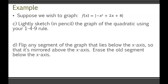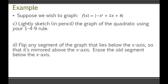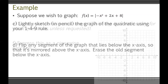Step C: lightly sketch in pencil the graph of the quadratic using the 1-4-9 rule. The word 'lightly' is really important because any negative portions are going to need to be erased later. Start with the vertex at (1, 9), then plot the x-intercepts at negative 2 and positive 4. You're already seeing a general outline of the graph.